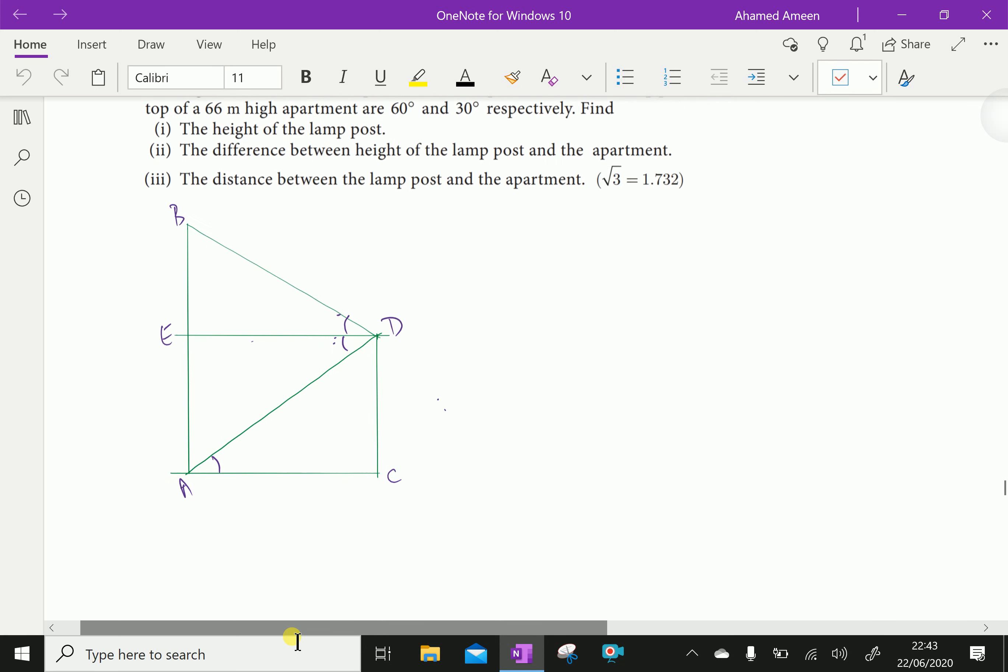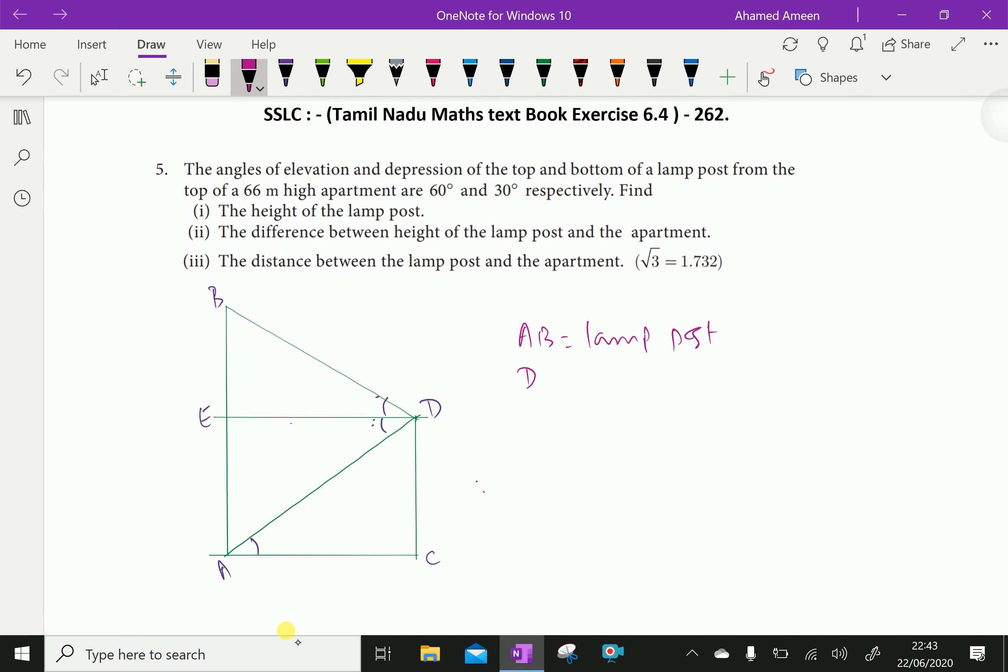Now look at this figure. AB is the lamp post and DC is the apartment. The height of the apartment is 66 meters, so we can say EA is also 66 meters. Let AB be X and AC be Y.